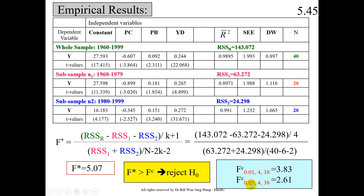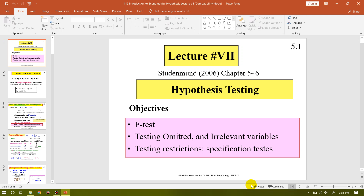This concludes our brief discussion about hypothesis testing using the F-test for testing omitted and irrelevant variables, restriction tests, specification tests, and the Chow test for whether the whole sample should be subdivided into two groups. If you liked this video, please share it with your friends, colleagues, and students. Don't forget to subscribe to the channel and click the bell icon for notifications about future videos. Thank you and have a good afternoon.